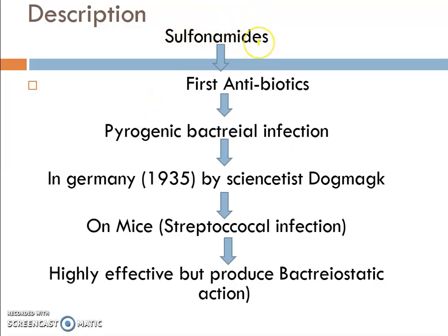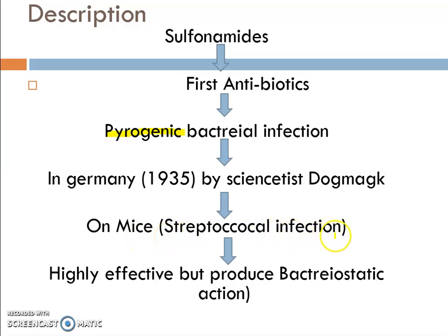Sulfonamide is the first antibiotic used for pyrogenic bacterial infections. Pyrogenic means those are varieties of conditions that induce our body temperature. In Germany, 1935, scientist Domagk discovered the sulfonamides on mice and experimented on streptococcal infections.